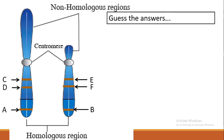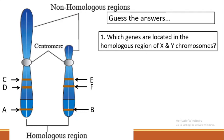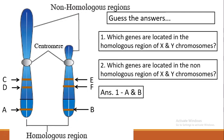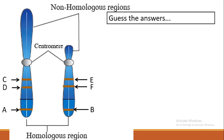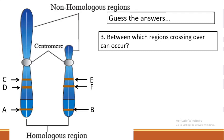Now we'll have some question-answer rounds before we proceed. First question: which genes are located in the homologous region of X and Y chromosomes? The answer is genes A and B, because we already know that region is the homologous region. Second question: which genes are located on the non-homologous region? The answer is genes C, D, E, and F.